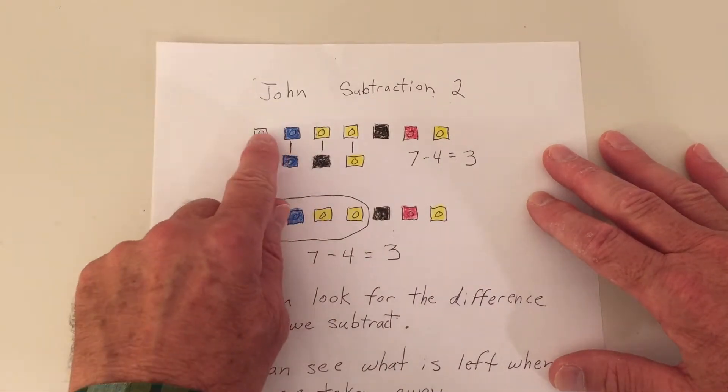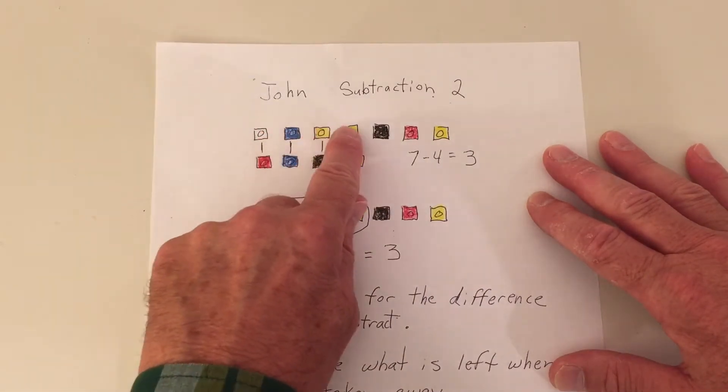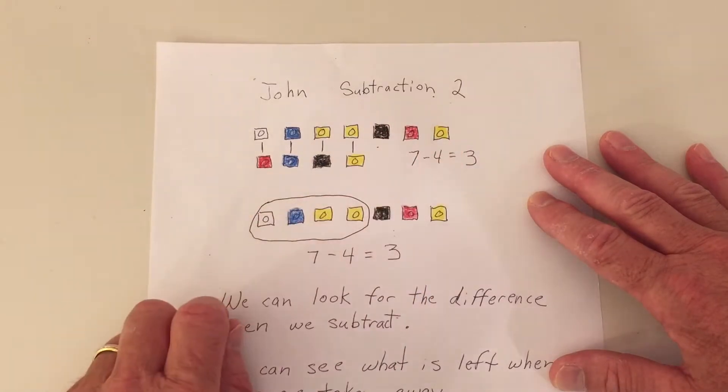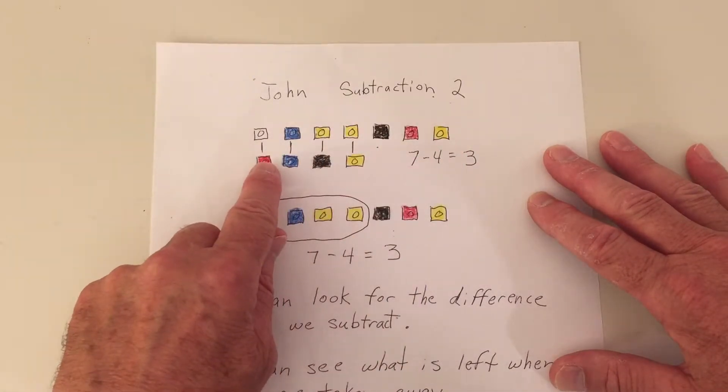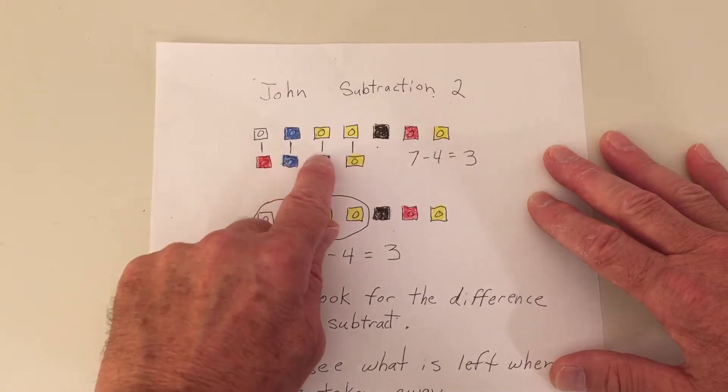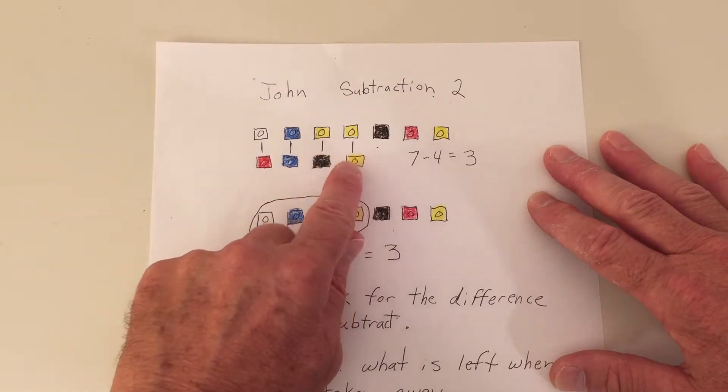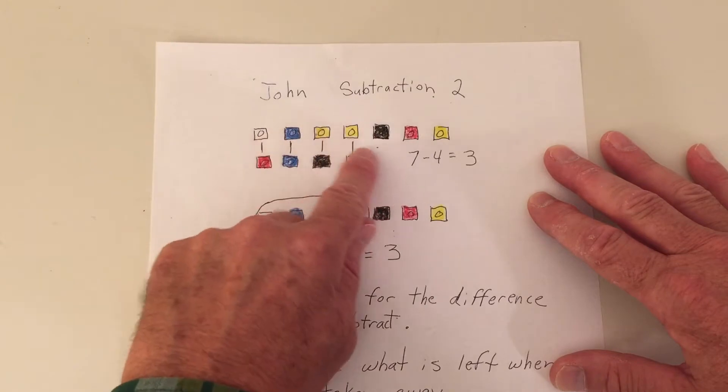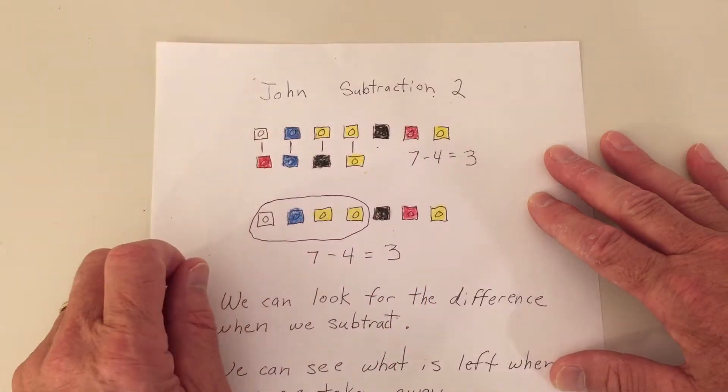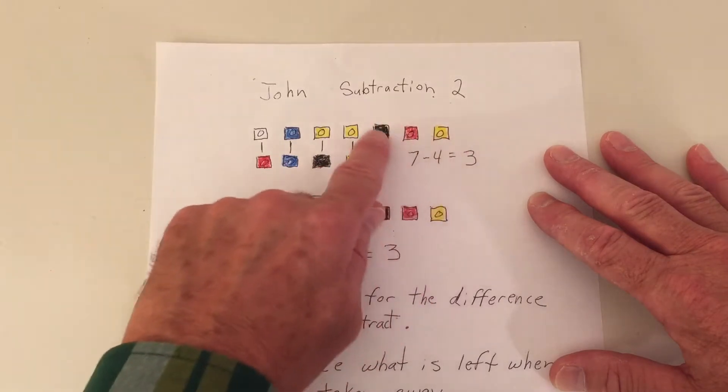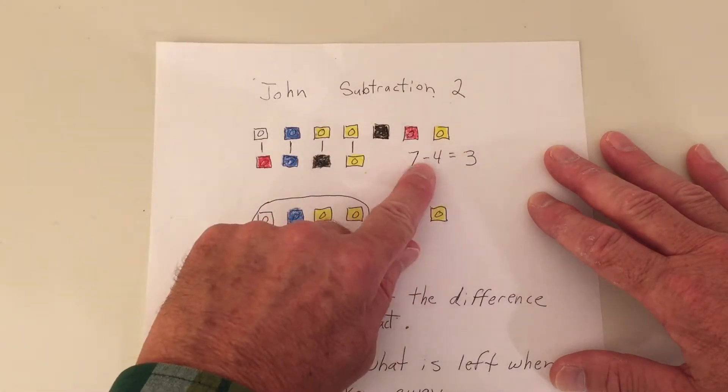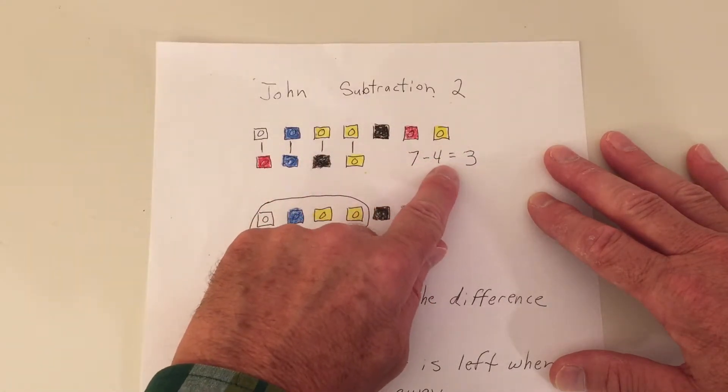I put my seven blocks down. One, two, three, four, five, six, seven. And then this is where we're going to compare. We're going to put four more blocks up. One, two, three, four. And we're comparing four to seven. What's different? The difference is three. Seven minus four is or equals three.